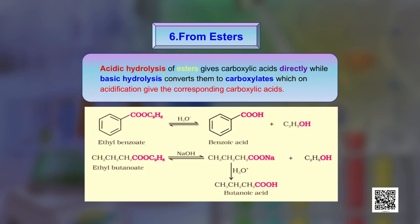The last method is from esters. Acidic hydrolysis of esters yields carboxylic acids directly in aqueous medium, but when basic hydrolysis is used, we first get carboxylate ions which on acidification give the corresponding acids. For example, hydrolysis of ethyl benzoate gives ethanol and benzoic acid, and hydrolysis of ethyl butanoate gives ethanol and butanoic acid.